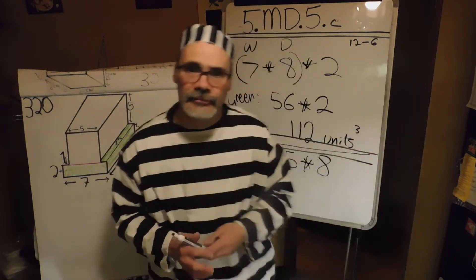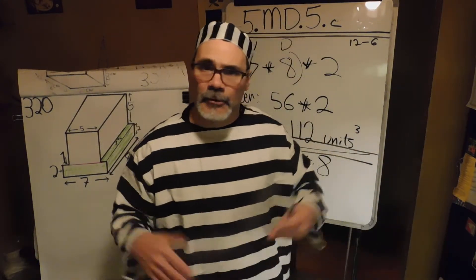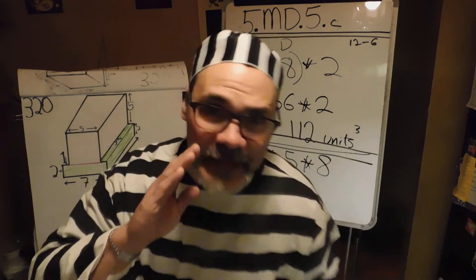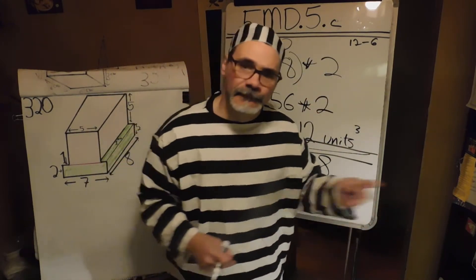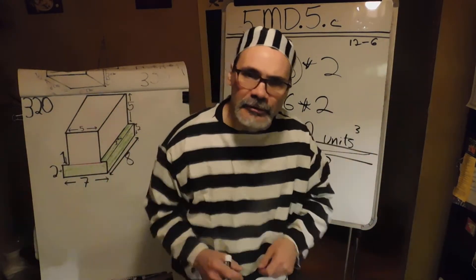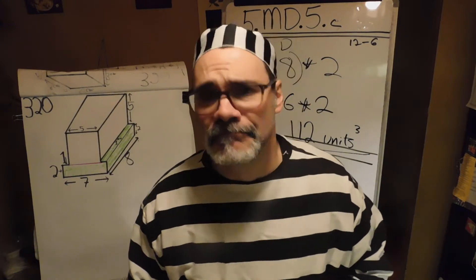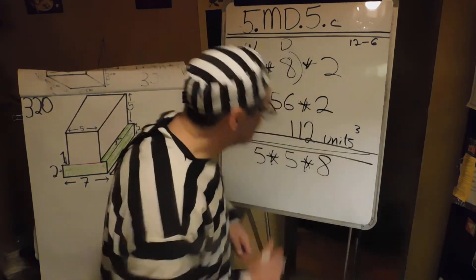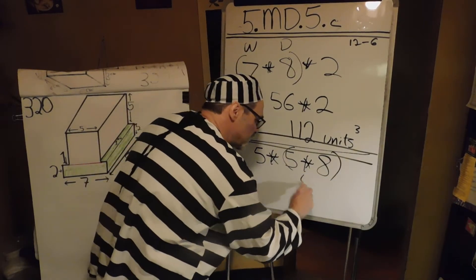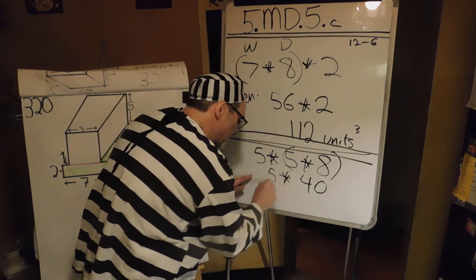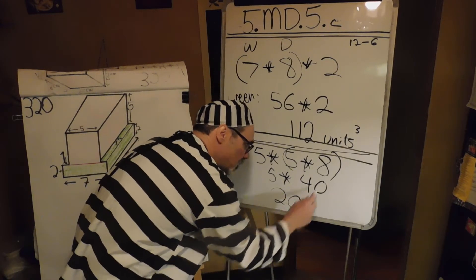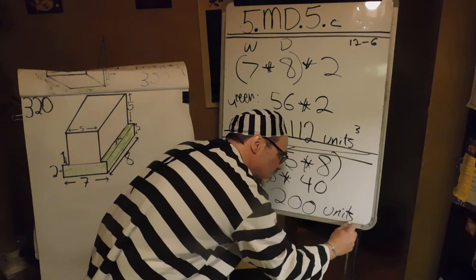Got a letter from my wife. She sent me a letter in jail and said she wanted to plant a vegetable garden. I said, don't plant anything in the garden — that's where I hid the money. A few days later she wrote back: some guys came with picks and shovels and dug everything up, turned the garden all over. So I sent her another letter: honey, now's the time to plant the garden. Anyway — eight times five is forty, and then multiply that by five. Five times four is twenty, don't forget the zero. So that's two hundred units cubed.